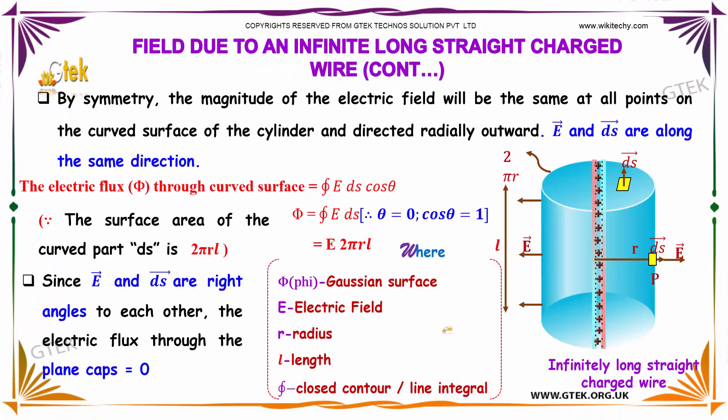By symmetry, the magnitude of the electric field will be the same at all points on the curved surface of the cylinder and directed radially outward. You can see here it is going radially outwards. The E vector and ds vector are along the same direction.